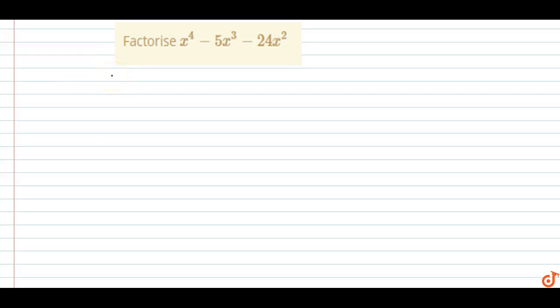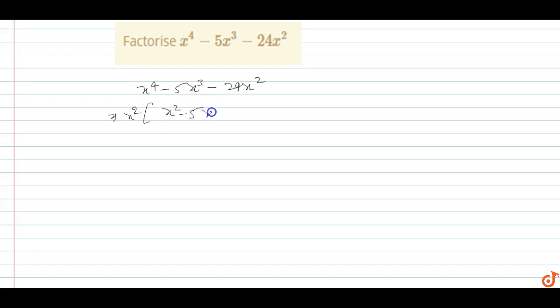In this question, factor x power 4 minus 5x power 3 minus 24x power 2. Taking x square as common, we get x square into x square minus 5x minus 24.